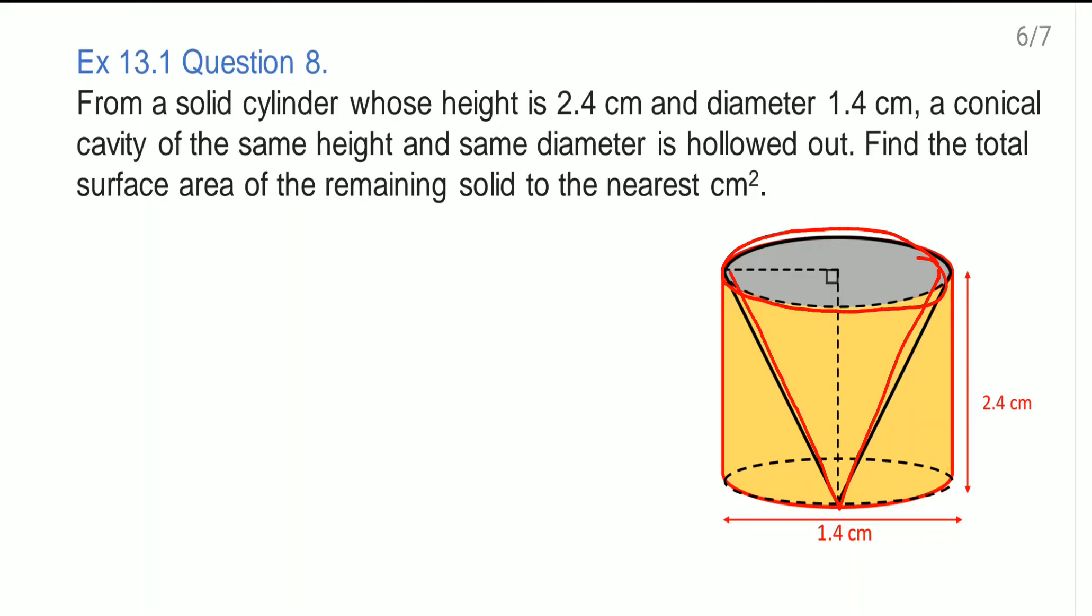Another thing is that you need to find out the surface area. So in the remaining solid, which area is there where you are able to touch? The outer CSA of the cylinder you are able to touch. Base you are able to touch. And this cavity is there. Here at this portion also, at this conical portion also you are able to touch.